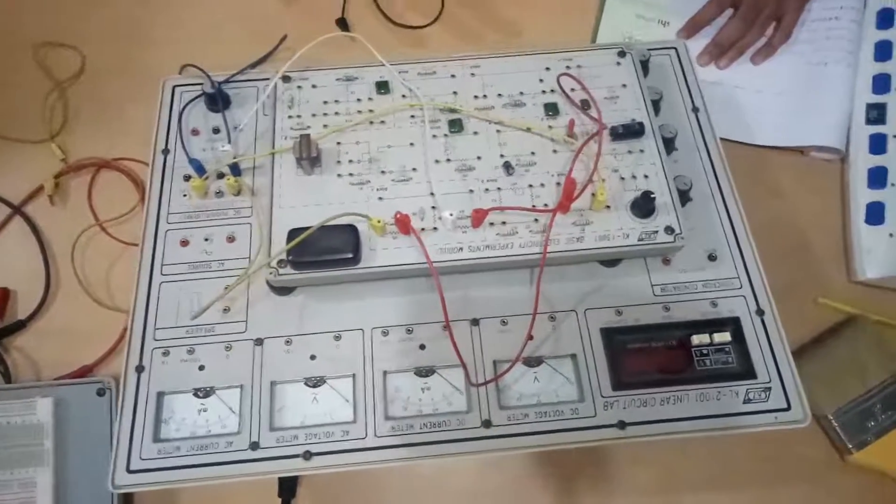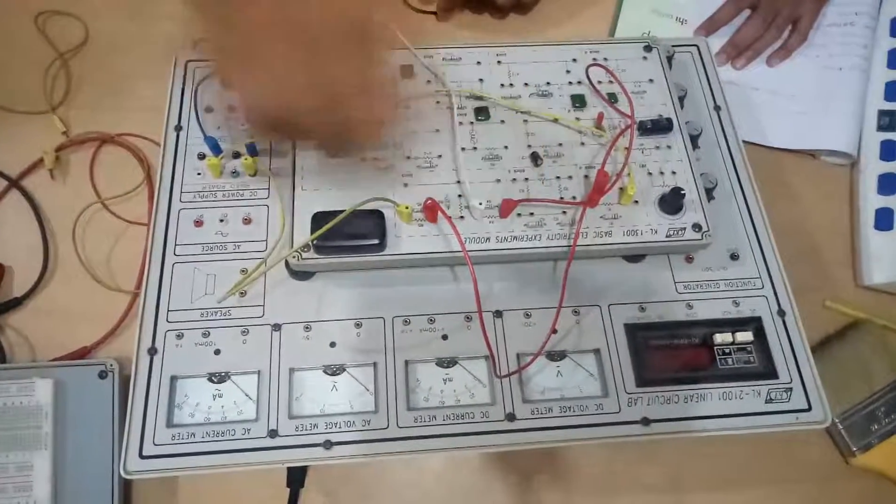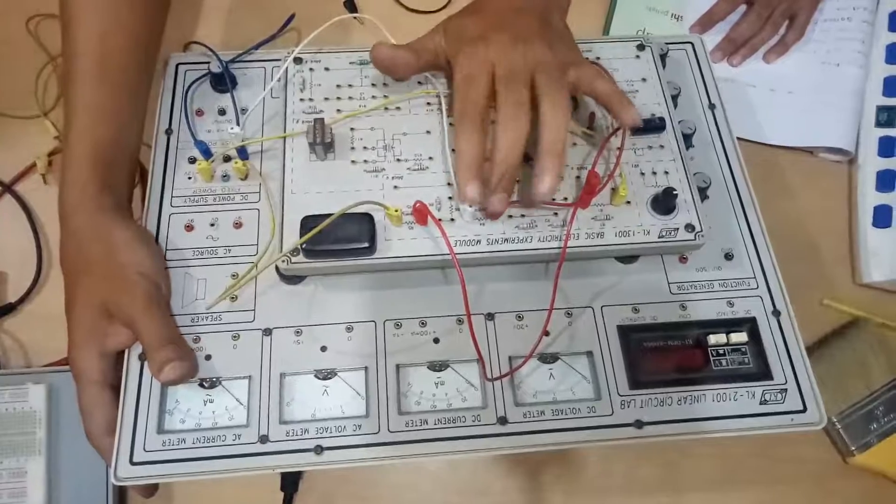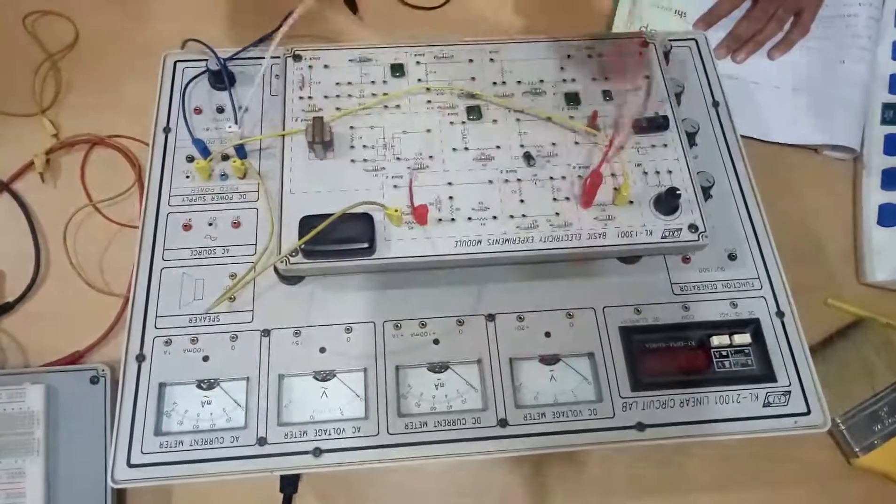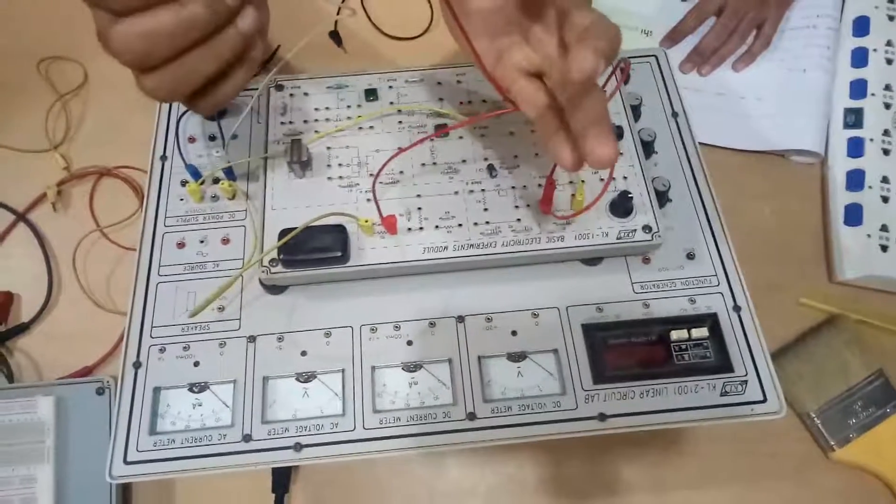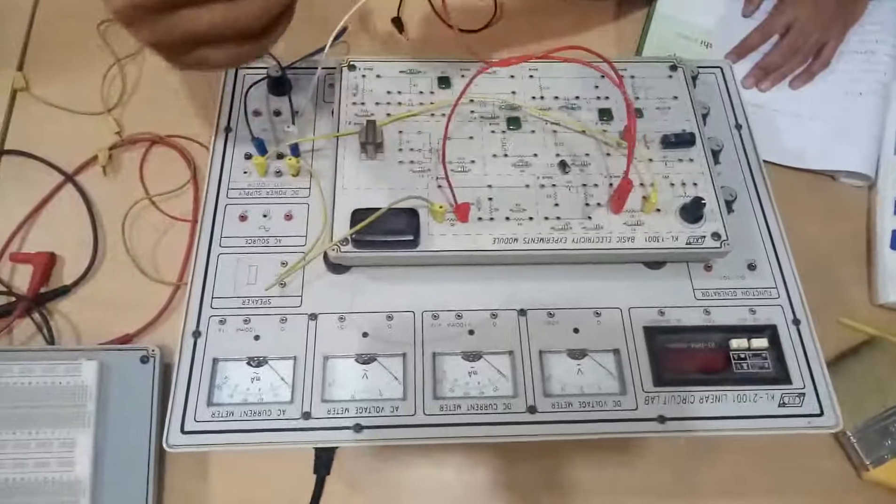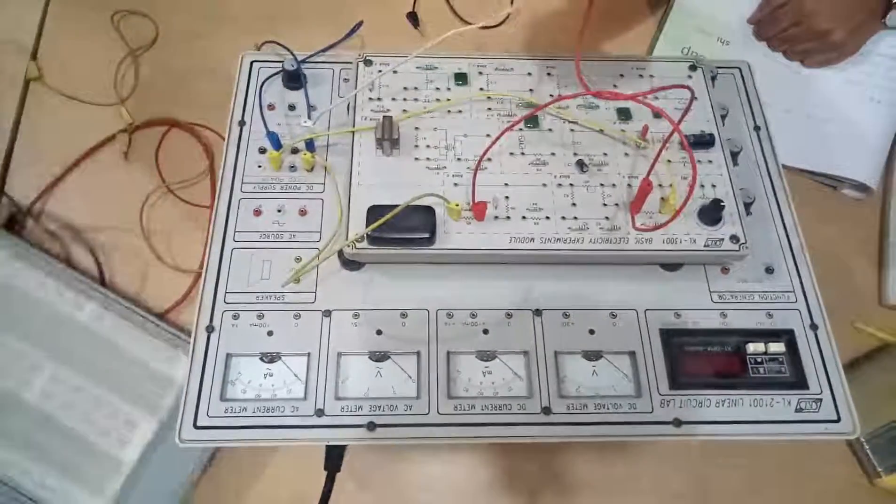Now, our first job is just to disconnect the load resistor. So this is the load resistor. Disconnect load resistor. Now, this is the two disconnected terminal. So for now, place a voltmeter in between this. Do you see a voltmeter of this? Yes, yes, sir.